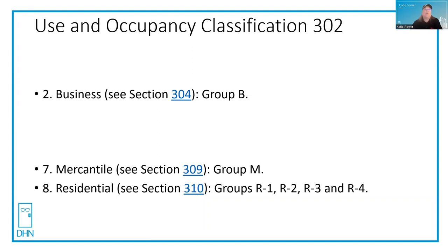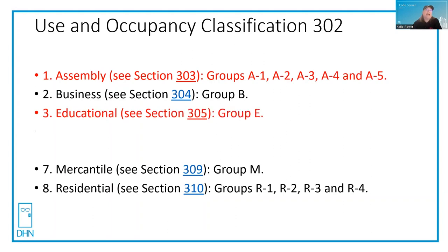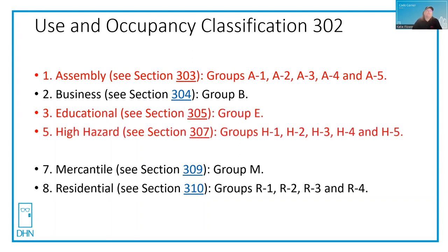What's considered higher risk — and the codes are then more restrictive — includes assembly, educational, and high-hazard occupancies. These are considered the three highest risk because of the large number of people in assembly, the school-age children in educational Group E K-12, including nursery schools. High-hazard is high-risk because materials are either highly flammable or likely to explode.